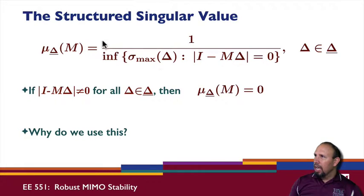When we have an uncertainty that is diagonal or block diagonal, it involves using the structured singular value. This is the basic definition for the structured singular value. This quantity says I'm going to look for all deltas such that I minus M delta has determinant that's zero. Of all of those deltas that do that, I want to find the minimum norm delta. One over that quantity then is mu of M. If I minus M delta has non-zero determinant for all delta in our uncertainty set, then mu is equal to zero.